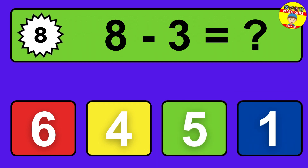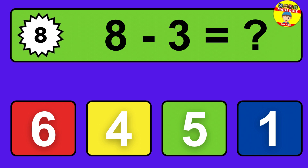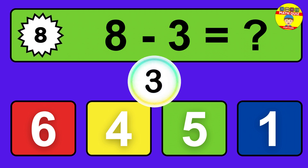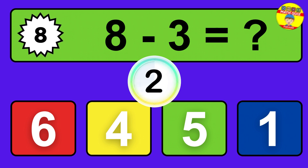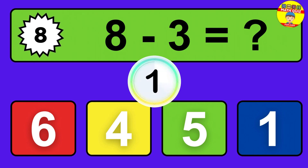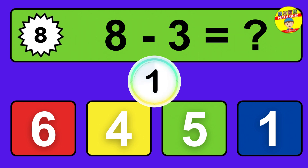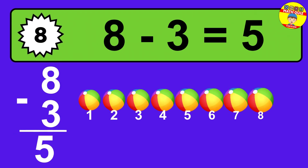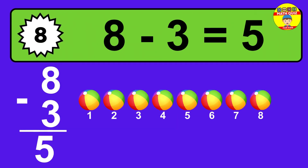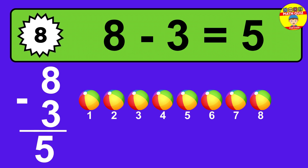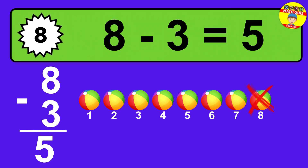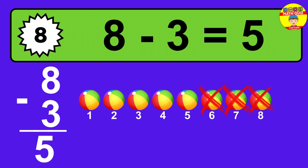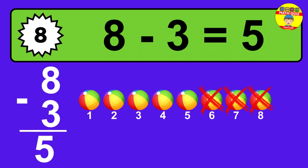Question eight: eight minus three equals what? The answer is eight minus three is five. Let's count it. One, two, three, four, five.